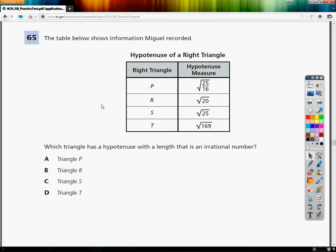The question asks, which triangle has a hypotenuse with a length that is an irrational number? An irrational number is a number that can't be set up as a fraction. So what I need to do is work out all of the square roots ahead of time, so I can just look at what their answers are.